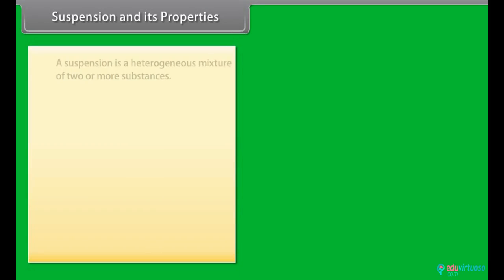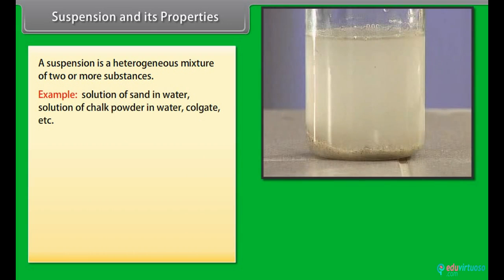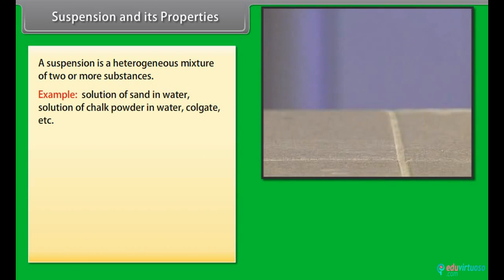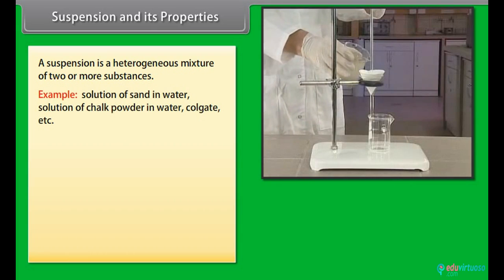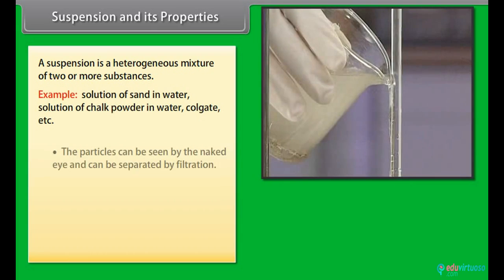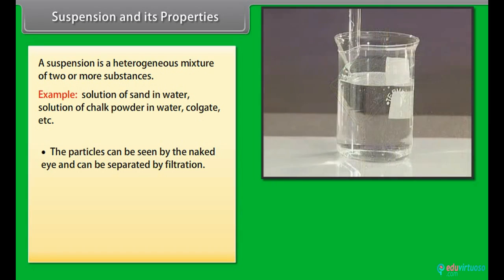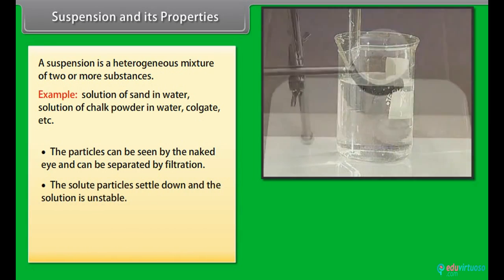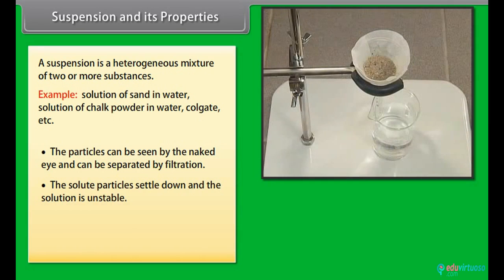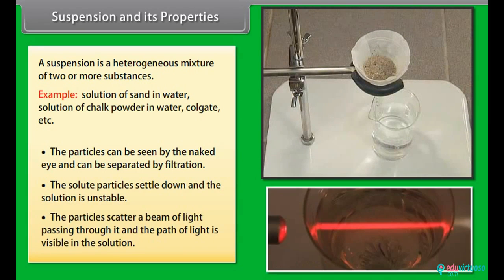Suspension and its properties: A suspension is a heterogeneous mixture of two or more substances. Examples include solution of sand in water, chalk powder in water, and Colgate. The particles can be seen by the naked eye and can be separated by filtration. The solute particles settle down and the solution is unstable. The particles scatter a beam of light passing through it and the path of light is visible in the solution.